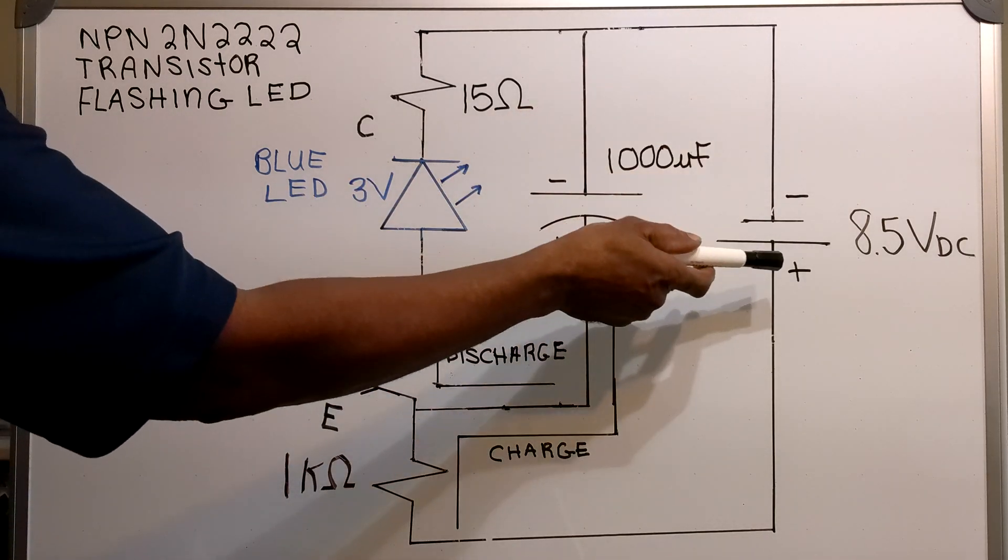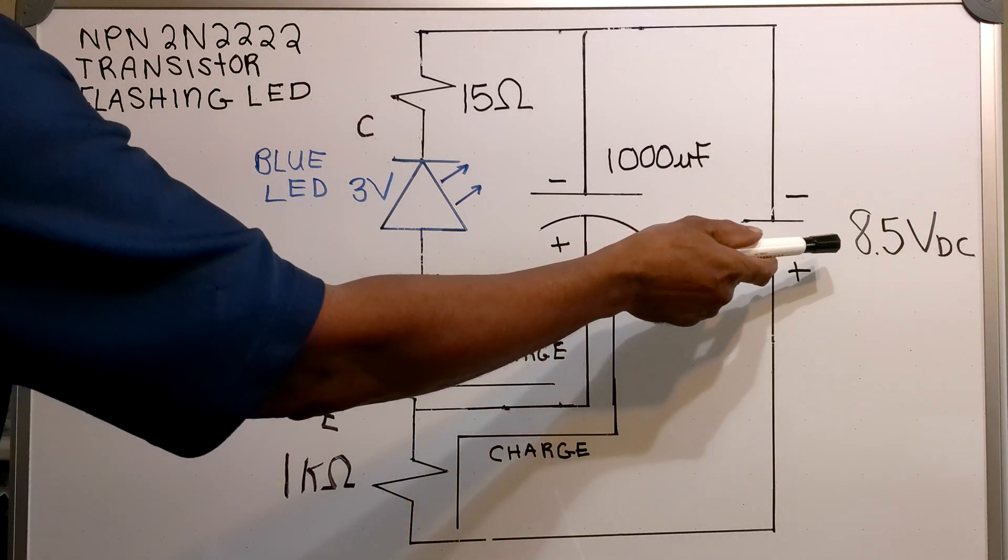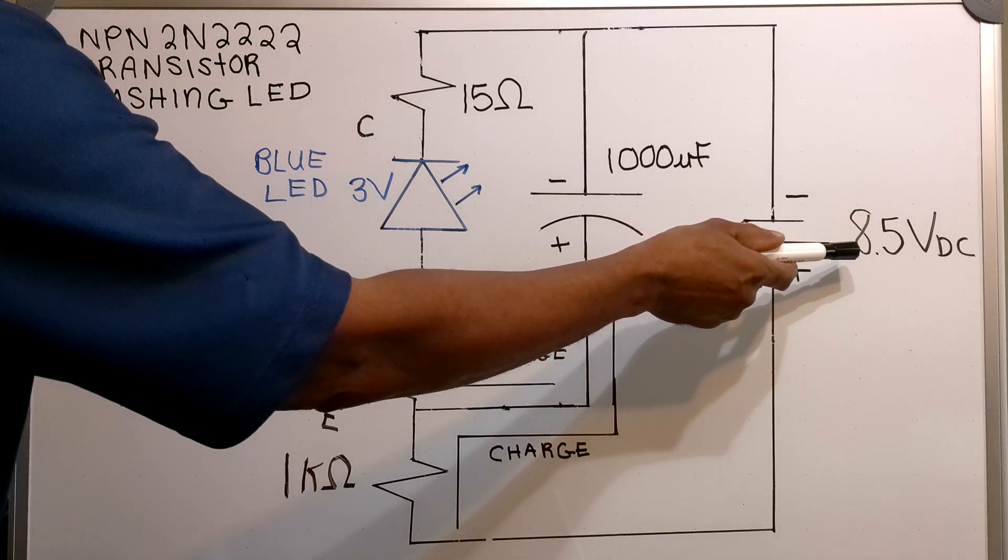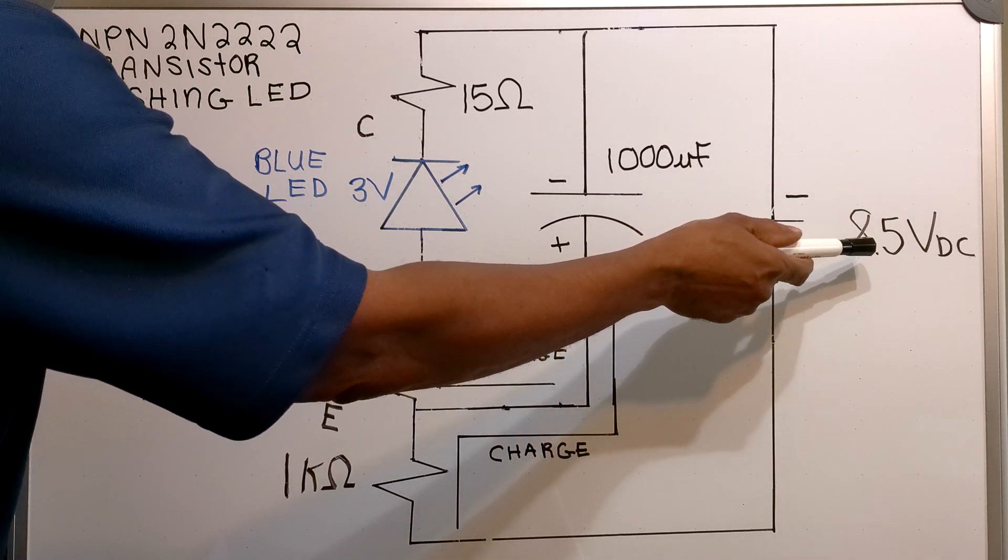Going across the transistor, I have a volt source of 8.5 volts DC.